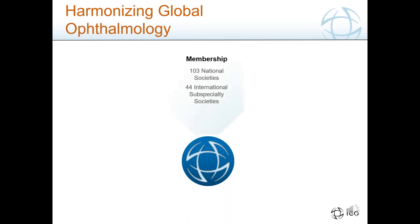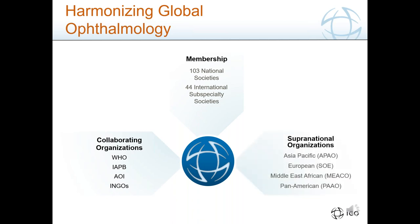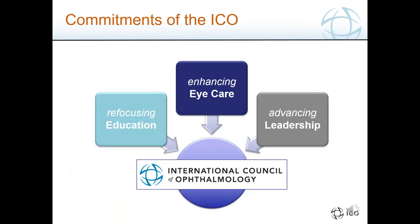The ICO, for those of you that don't know them well, is an international organization that has 103 national ophthalmology societies and 44 international ophthalmology societies as members. We work together with other NGOs and supranational organizations in ophthalmology from Asia Pacific, Europe, the Middle East, and America. The commitments of the ICO are three: education, enhancing care, and advancing leadership.